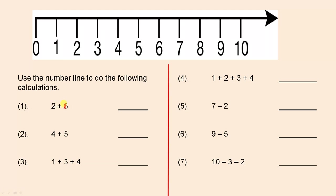We have two plus three. See the first number, two — place the pencil on the number two. Now the next number is three, so all we do is count three places to the right: one, two, three. We've landed on the five, and that's why the answer is five. So there's an example of how to use the number line.